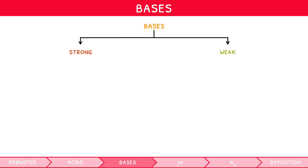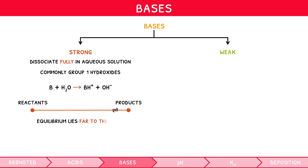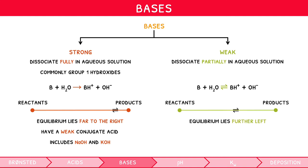Just like acids, bases can be defined as strong or weak. Strong bases dissociate fully in aqueous solution and commonly take the form of group 1 hydroxides, for example sodium hydroxide. Reviewing the equation we created earlier, we can replace the reversible arrow with a single arrow, as equilibrium lies so far to the right. Strong bases have a weak conjugate acid. Common strong bases include NaOH and KOH. Weak bases dissociate partially in aqueous solution, expressed using a reversible arrow, and their position of equilibrium does not lie far to the right, varying based on the base. Weak bases also have a strong conjugate acid. Common weak bases include NH3 and CH3NH2.